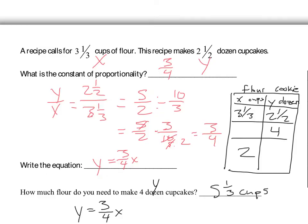Let's take a look at the first half of this practice work. We have cups of flour and dozens of cookies. Cups of flour is X since making cookies depends on having flour, and dozens of cookies is Y. Finding the constant of proportionality — Y over X — gives us two and a half dozen over three and a third cups: five-halves divided by ten-thirds. The arithmetic gives a constant of proportionality of three-fourths, so the equation is Y equals three-fourths X.